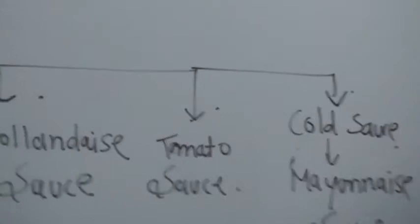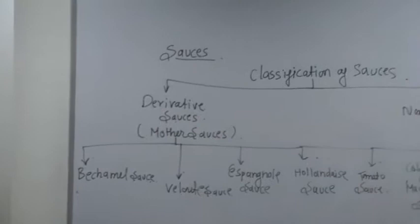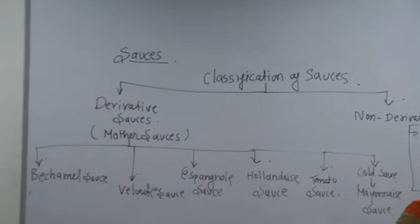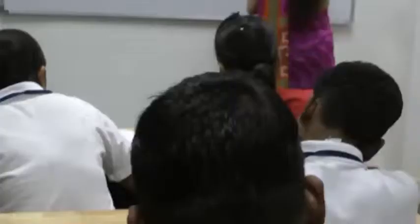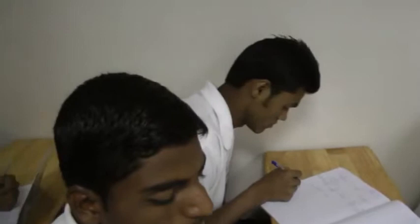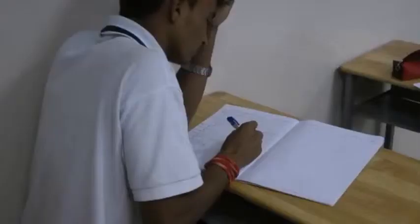Now we will see non-derivative sauces. Non-derivative sauces means that no variation is available. In which we can add some ingredients or different ingredients, no sauce is available. That is called non-derivative sauces. First is ketchup, second is soya sauce. This is our classification of sauces.